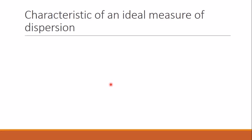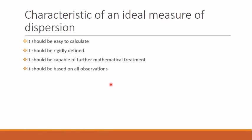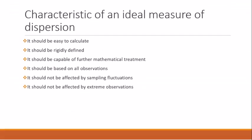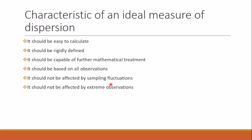Finally, the characteristics of an ideal measure of dispersion are: it should be easy to calculate, rigidly defined, capable of further mathematical treatment, based on all observations, not affected by sampling fluctuations, and not affected by extreme observations. Standard deviation is the measure that almost satisfies all these characteristics and is the most important measure of dispersion.